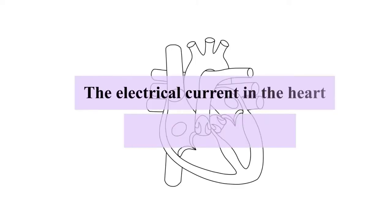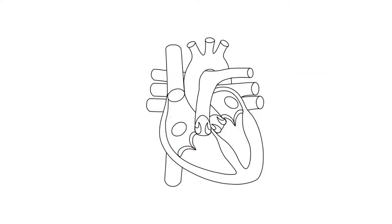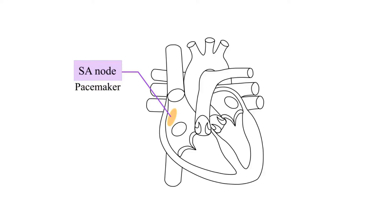The electrical current in the heart flows from cell to cell. The heart's electrical current originates in a group of cells in the right atrium known as the sinoatrial node. These cells are also known as pacemaker cells.